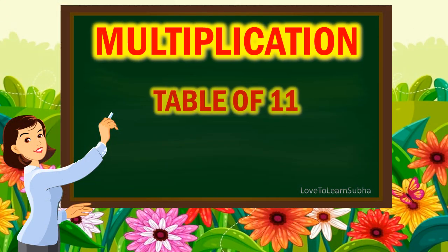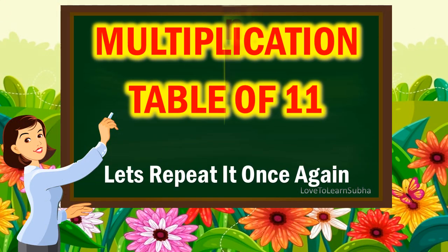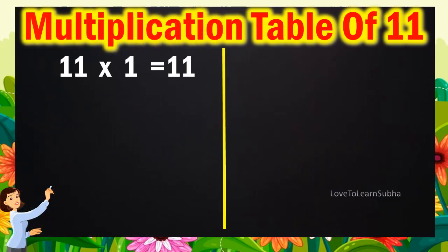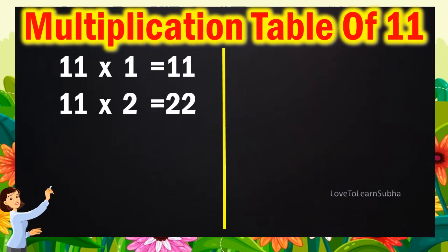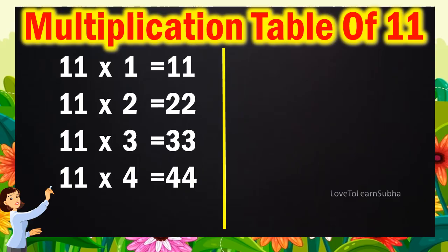Now, let's repeat it once again. 11 1s are 11. 11 2s are 22. 11 3s are 33. 11 4s are 44. 11 5s are 55.